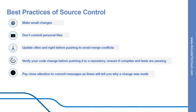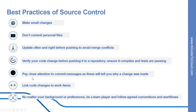Pay close attention to commit messages, as these will tell you why a change was made — consider commit messages as a mini form of documentation for the change. You can also link code changes to work items, which concretely links what was created to why it was created or changed, providing traceability across requirements and code changes. The last best practice is, no matter your background or preferences, be a team player and follow agreed conventions and workflows. Consistency is very important and helps ensure quality, making it easier for team members to pick up where you left off, review your code, and debug. Using version control is necessary for any organization, and following these guidelines can help developers avoid needless time spent fixing errors. These practices also help organizations reap greater benefits from having a good version control system.